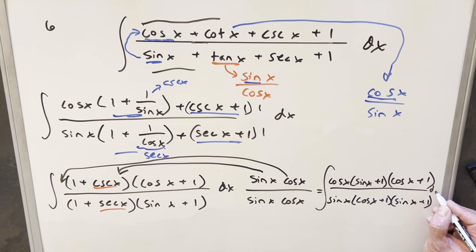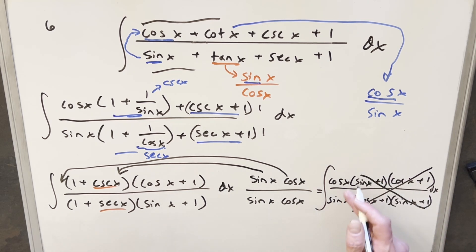And I'll create the smallest dx in the world right there, just so that I have it. But now we get all kinds of cancellation because cosine x plus 1 cancel with cosine x plus 1. Sine x plus 1 cancel with sine x plus 1. And we're just left with cosine x over sine x. So let's just do this integral and then we can finish it off.